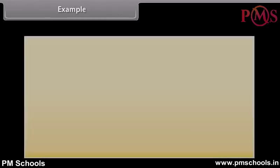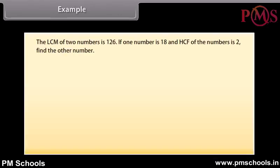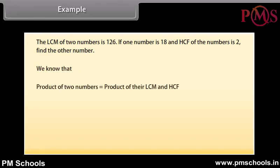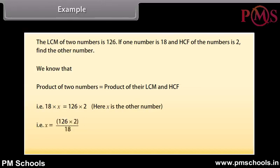Example: The LCM of two numbers is 126. If one number is 18 and the HCF of the numbers is 2, find the other number. We know that the product of two numbers equals the product of LCM and HCF. So 18 into X equals 126 into 2. Therefore X equals 126 into 2 divided by 18, which gives X equals 14.